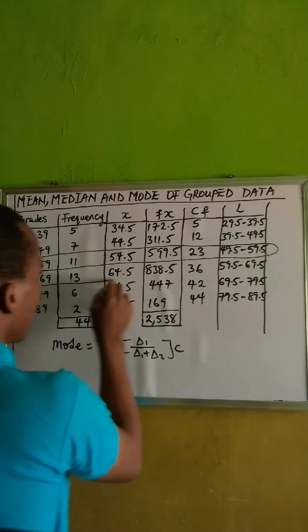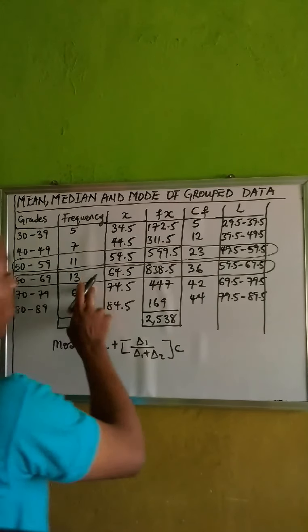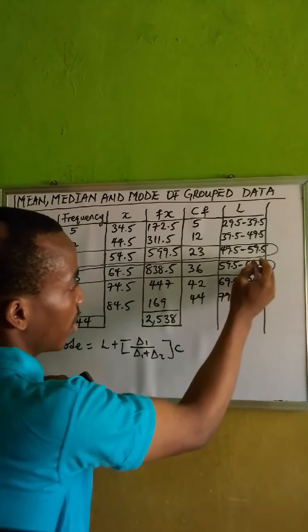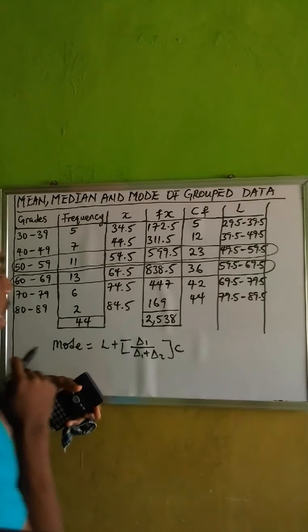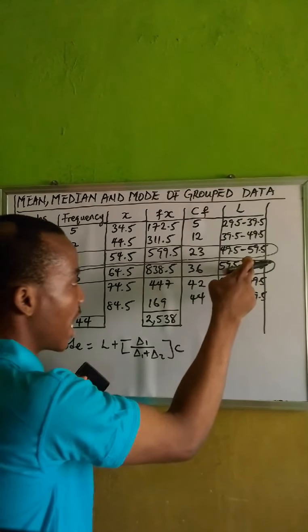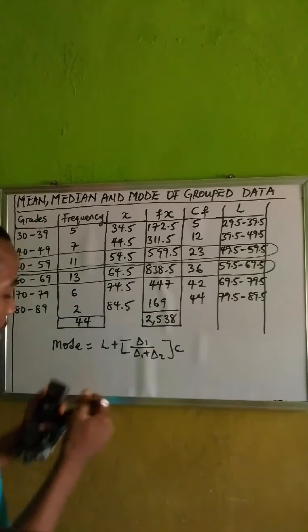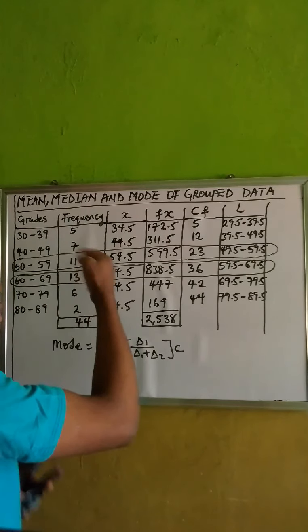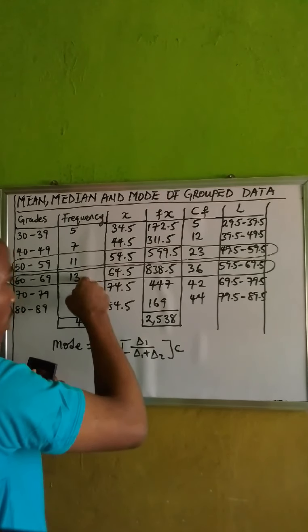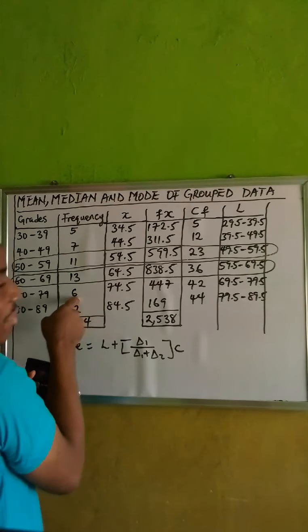So the mode falls under the 60–69 class. The lower class of the mode is 59.5 and the higher class is 69.5. The class size is 69.5 minus 59.5, which gives 10. Data 1 is found by subtracting the frequency before the modal class from the modal frequency, and data 2 is found by subtracting the frequency after the modal class from the modal frequency.